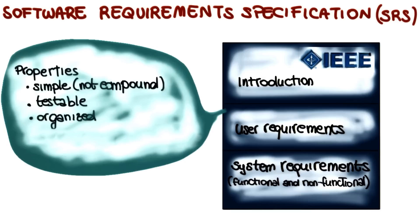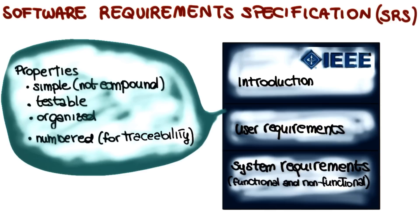Requirements should be organized. Related requirements should be grouped, more abstract requirements should contain more detailed requirements, and priorities should be clearly indicated when present. Finally, requirements should be numbered so that they can be traced. Numbered requirements will allow you to trace them to design, implementation, and testing elements and items, which is something you might have to do for one of the projects and that we will discuss in more detail in a later class.